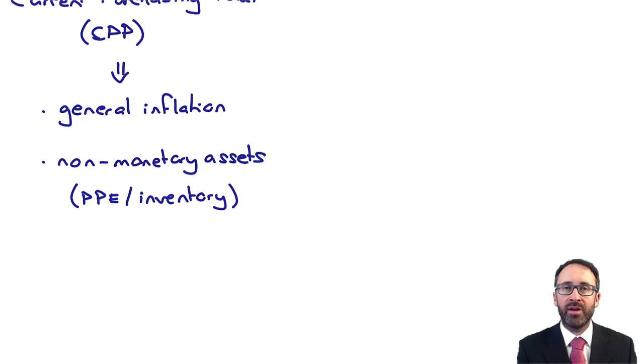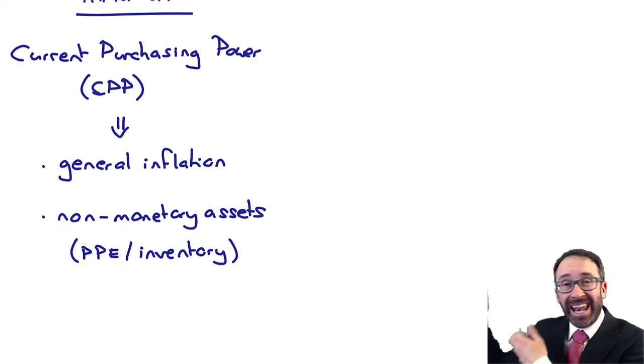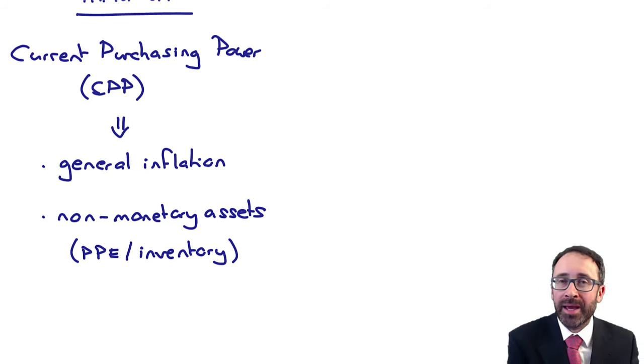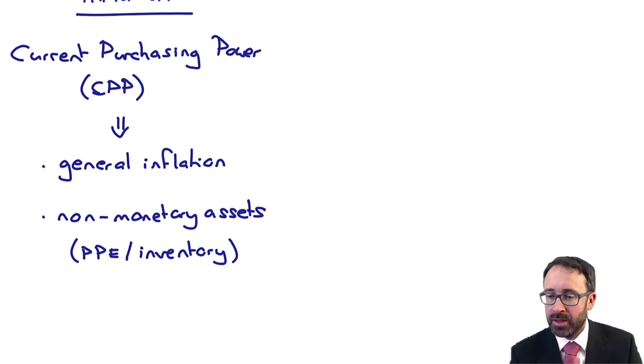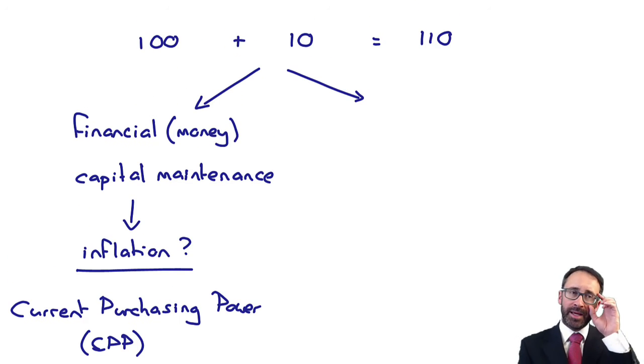With your current purchasing power, if there is inflation present, this financial money capital maintenance is what all businesses adopt, but they just ignore the effects of inflation because the effects of inflation are immaterial. If it's immaterial, it's not relevant to the users of the accounts, and it's going to get complicated, so why complicate it further? If you were to incorporate it, you would use current purchasing power, general inflation applied to the non-monetary assets.